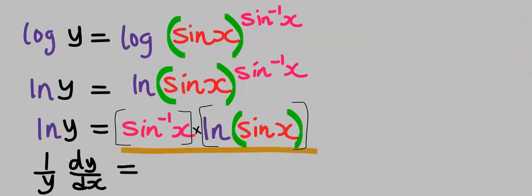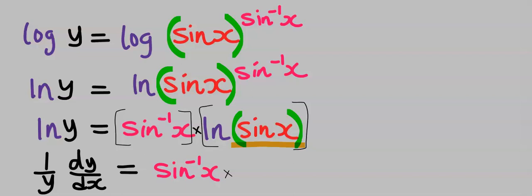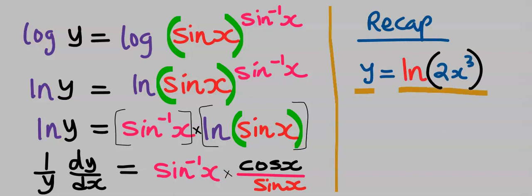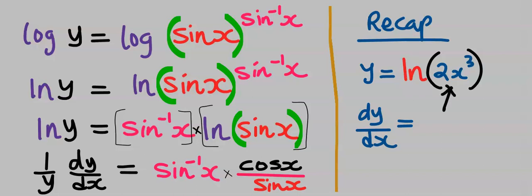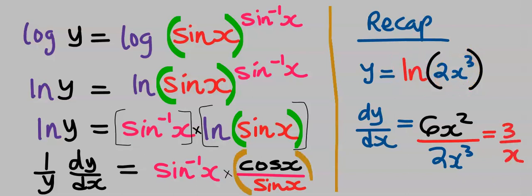Next, we apply product rule. Keep sine inverse of x constant and differentiate the natural log of sin x. When you differentiate sin x, you get cos x; then recopy sin x to the denominator, giving cos x divided by sin x. As a recap: if y equals the natural log of 2x to the power of 3, then dy/dx equals 6x squared divided by 2x to the power of 3, because we differentiated the natural log of that function. That's how we obtained cos x divided by sin x.